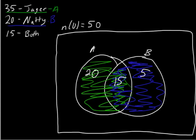So here we have 20 students only drinking Jäger, 15 drinking both Jäger and Natty, and 5 drinking only Natty.